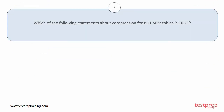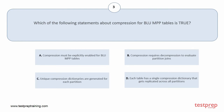Question number 3. Which of the following statements about compression for BLU MPP tables is true? Your options are: A. Compression must be explicitly enabled for BLU MPP tables. B. Compression requires decompression to evaluate partition joins. C. Unique compression dictionaries are generated for each partition. D. Each table has a single compression dictionary that gets replicated across all partitions. The correct answer is option D.